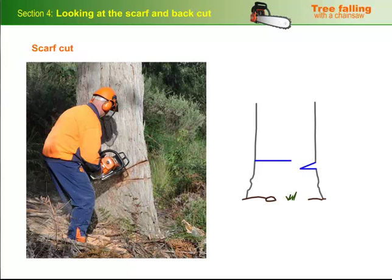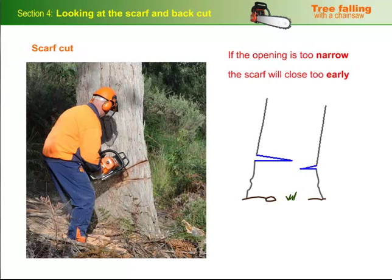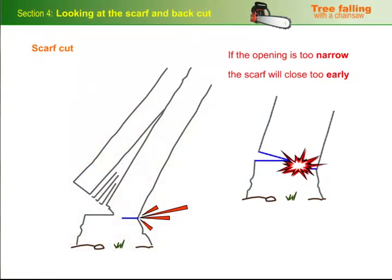For example, if the opening is too narrow, the scarf will close too early and break the hinge wood before the tree's fall is under control. This is likely to affect the direction of the fall. It might also cause the tree to split up or slab.